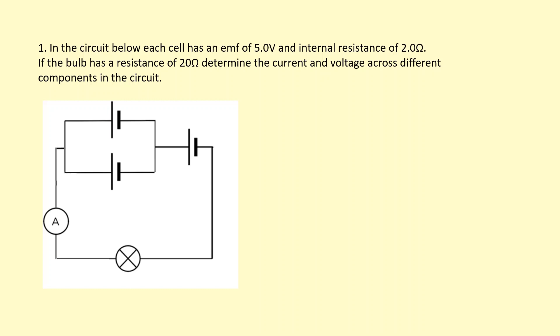In the circuit below, each cell has an EMF of 5 volts and internal resistance of 2 ohms. The bulb has a resistance of 20 ohms. Determine the current and voltage across the different components in the circuit. I'm going to add all this information onto the diagram.